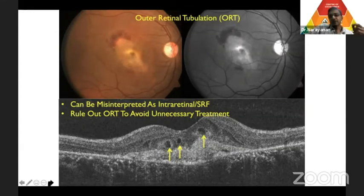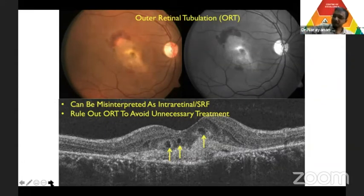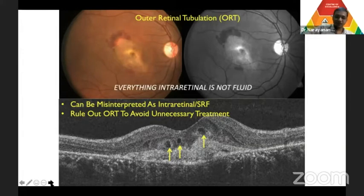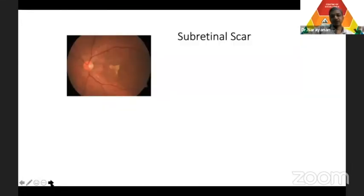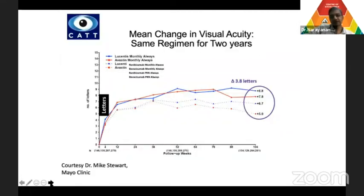Not every dark reflective space on OCT is edema. This is outer retinal tubulation — a hyper-reflective lining. These are not suggestive of edema and do not need treatment. Similarly, subretinal scar with shadowing underneath a thick membrane does not require injection.